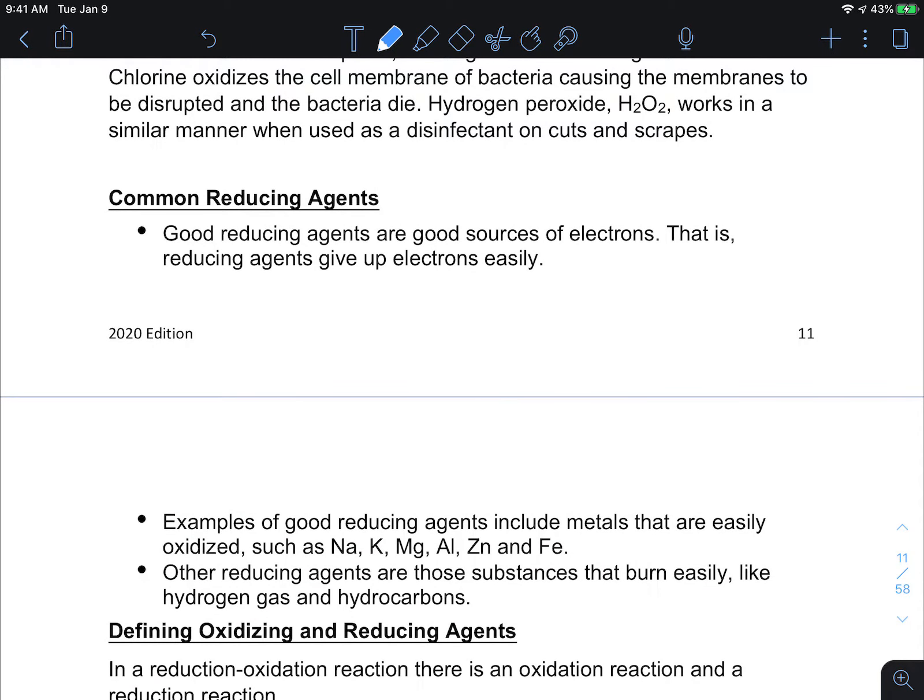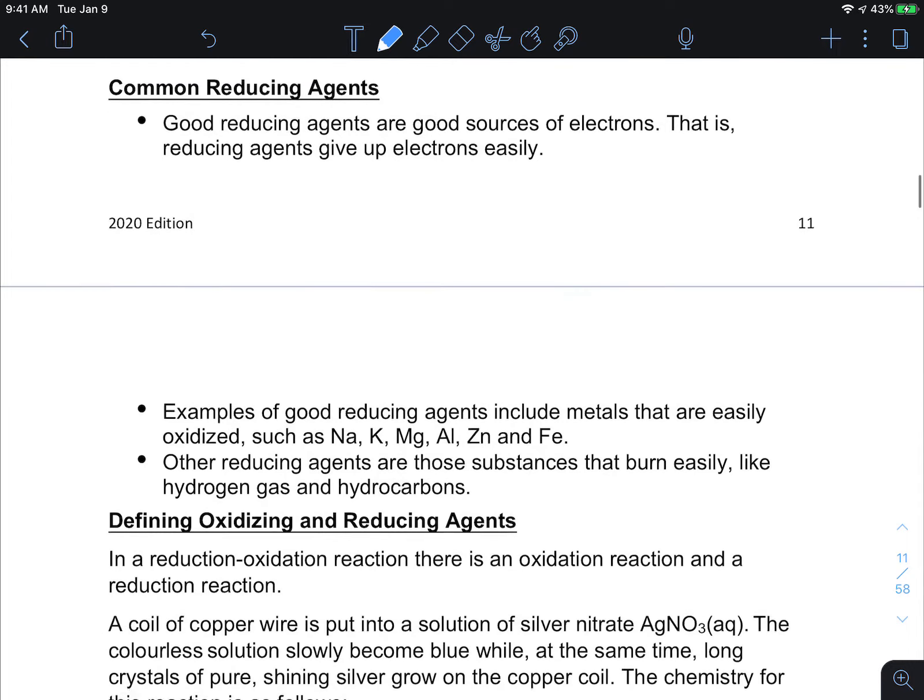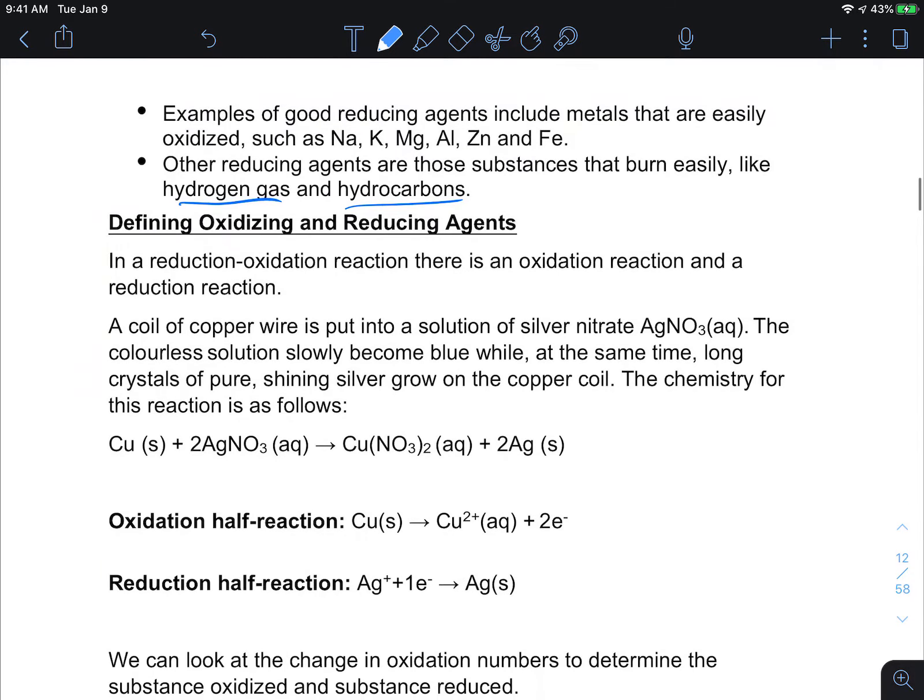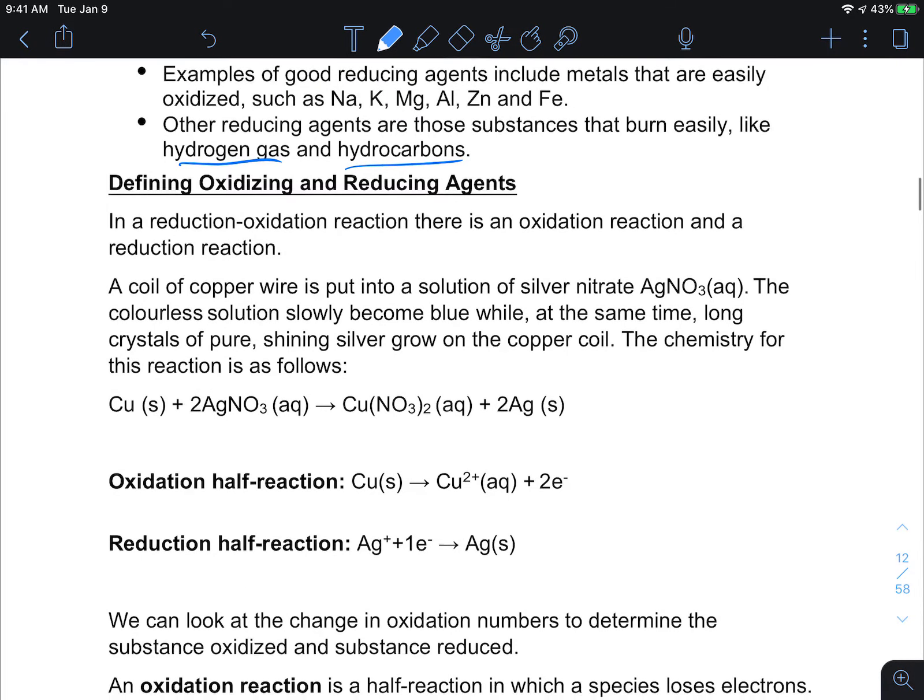Reducing agents are agents that are a good source of electrons, so these are agents that can give up electrons very easily. In this example we're usually looking for a metal. Metals are some of the strongest reducing agents but there are also other things like anything that burns easily like a hydrocarbon or hydrogen gas. In that burning reaction they are giving away their electrons and that's how the burning reaction follows.